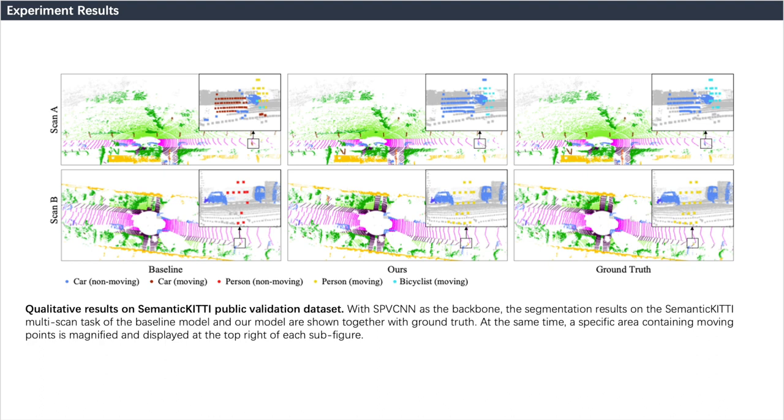Here we show the qualitative performance comparison between our method and baseline methods separately. As shown, our method can well segment moving people and bicycles, as well as static cars. But baseline methods do not do this well, mispredicting their motion states.